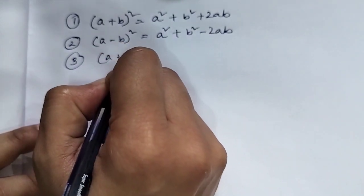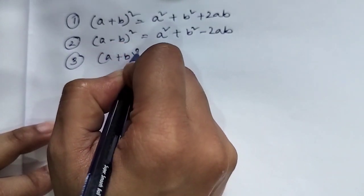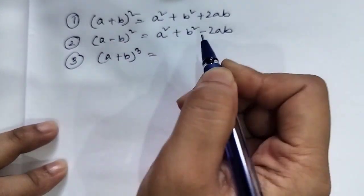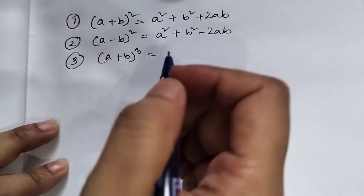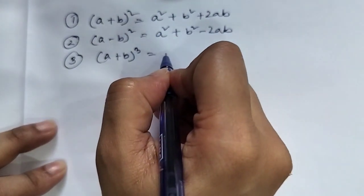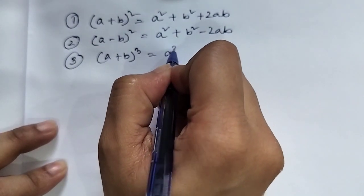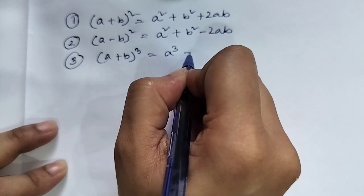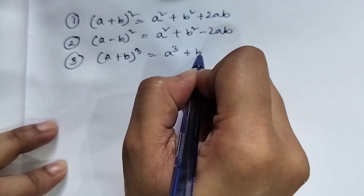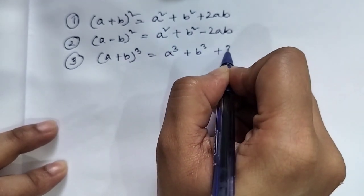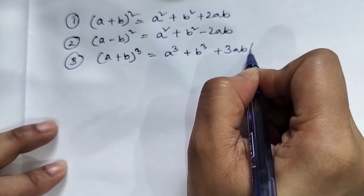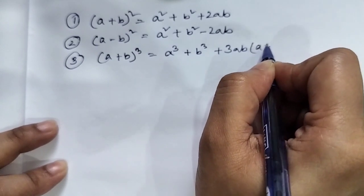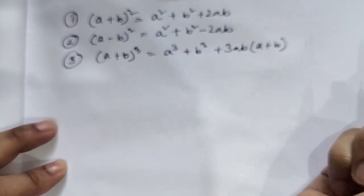a plus b whole cube formula: a cube plus b cube plus 3ab(a plus b).